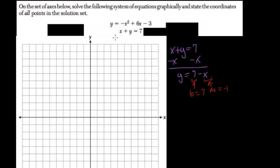I know they want it graphically but I like to support it with the algebra here. So at some point then 7 minus x is going to equal the quadratic minus x squared plus 6x minus 3.